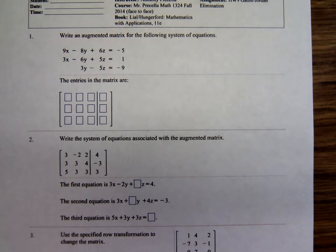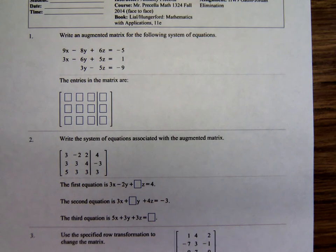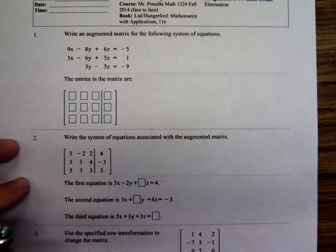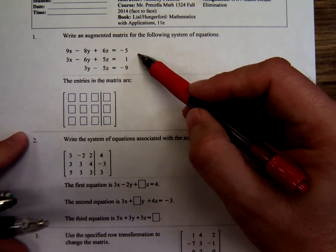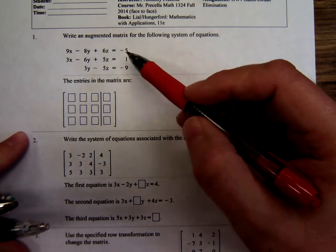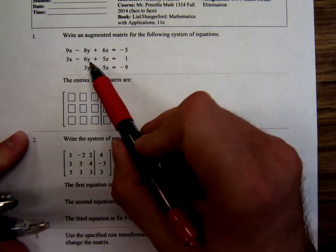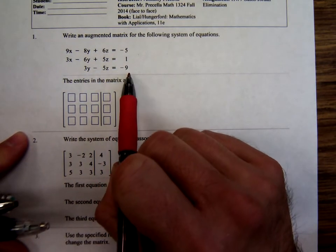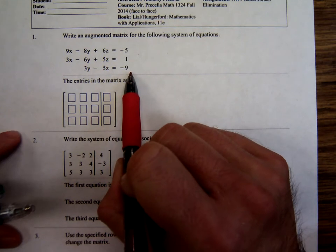We start off with something we sort of hint at in college algebra. Those of you that had me for college algebra, this was one of the easy stuff, writing augmented matrices. And with the augmented matrix, you have a system of equations. A system of equations is just a group of equations.